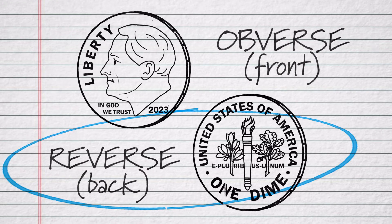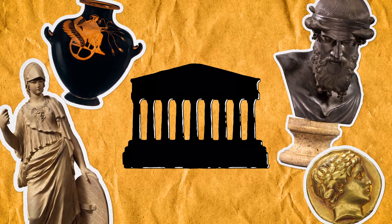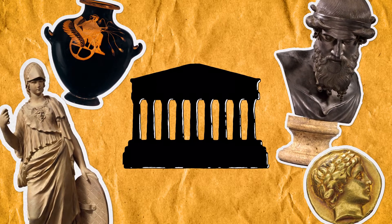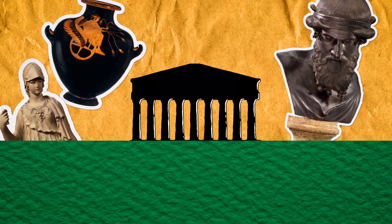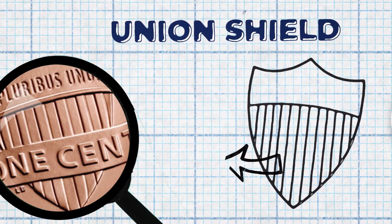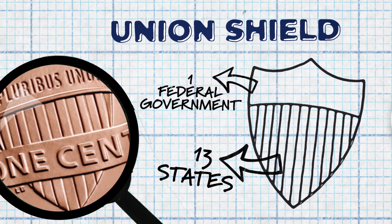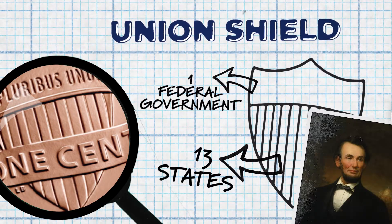The reverse, or back of the coin, includes a variety of images and symbols. Some of these symbols have roots in ancient Greece or Rome, and have been used for thousands of years to mean other things. Let's review some of the common symbols, starting with the penny. The union shield on the penny has 13 stripes that represent the 13 original states. The bar across the top represents the federal government. Altogether, it symbolizes the U.S. as a single country, kept united by President Lincoln.